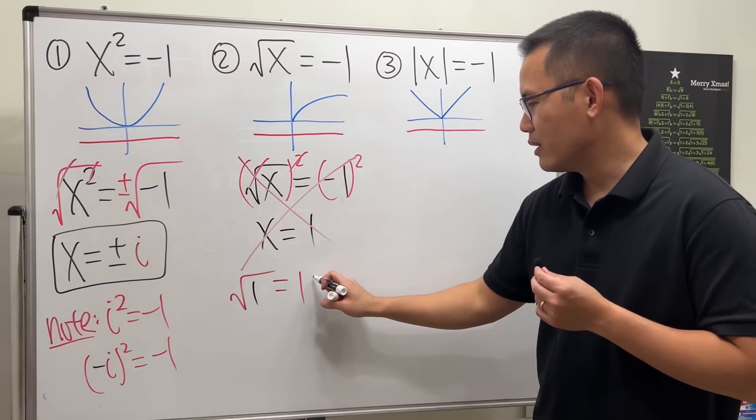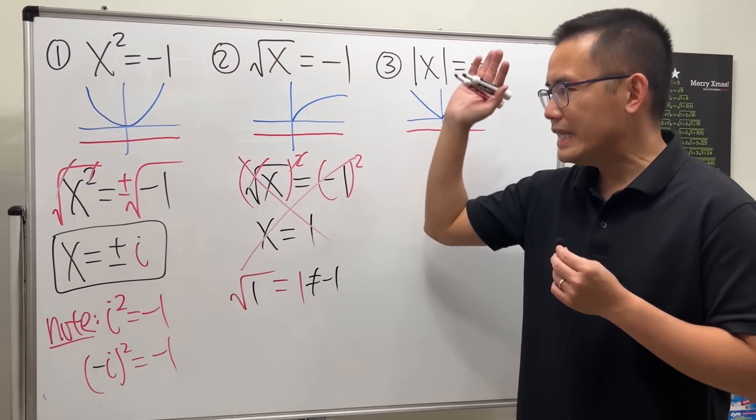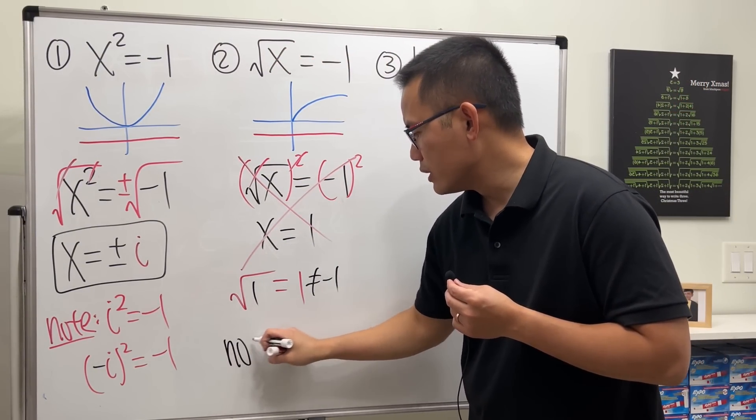We're trying to get to negative one, so not equal. That's why this equation in fact has no solution, not even in the complex world.